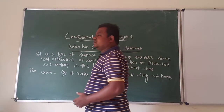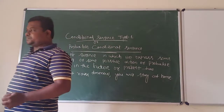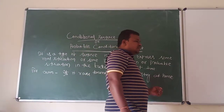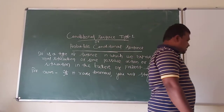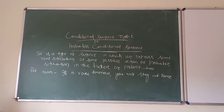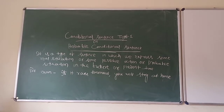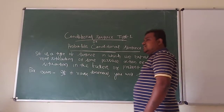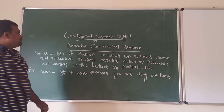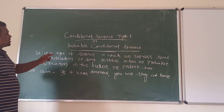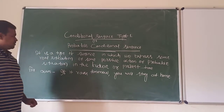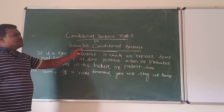The third type of conditional sentence is the hypothetical or unreal conditional sentence. And the next one is the unreal or impossible conditional sentence, type 4. So today, we will discuss what is conditional sentence type 1, or probable conditional sentence.